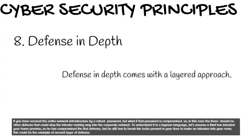To understand defense in depth in layman's terms, assume a thief has intruded your home premises — he has compromised the first defense. But he still has to break the locks on your door to make an intrusion into your room. This is an example of the second layer of defense.